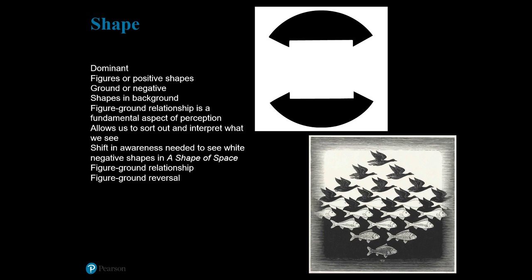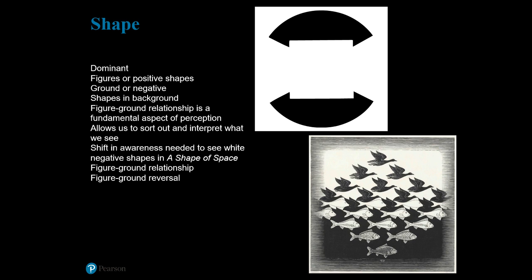A specific kind of figure-ground relationship is illustrated in M.C. Escher's Sky and Water — the figure-ground reversal. As our eyes move down the artwork from the top, the light upper background with dark geese becomes a dark background with light-colored fish shapes. In the middle of the composition, the fish and geese are so skillfully interwoven that we aren't sure what's figure and what's ground. That is the figure-ground reversal.